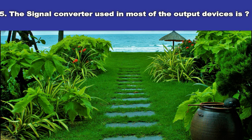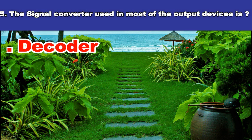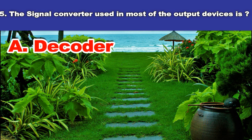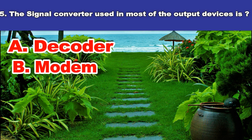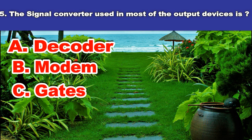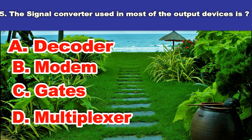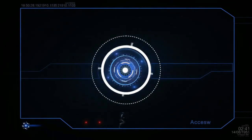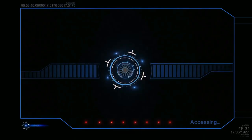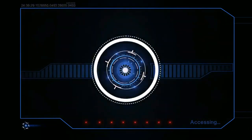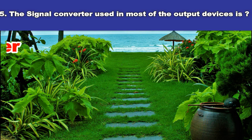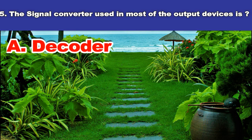Fifth question. The signal converter used in most of the output devices is? A. Decoder. B. Modem. C. Gates. D. Multiplexer. And the answer is: decoder.